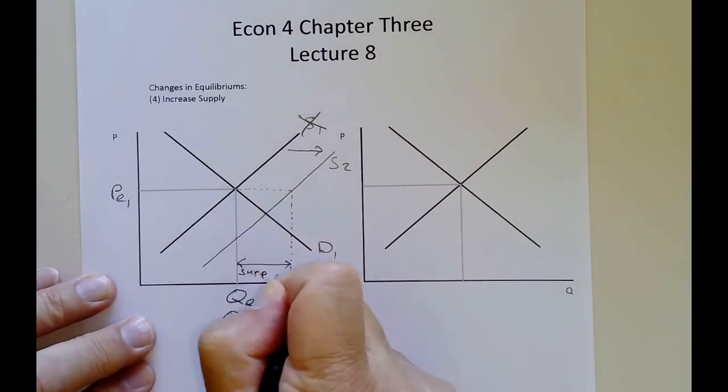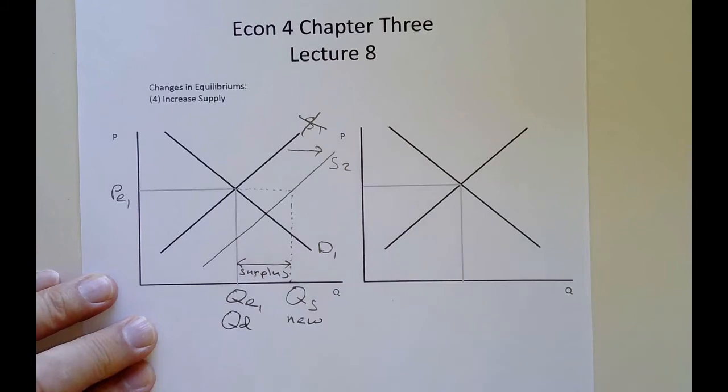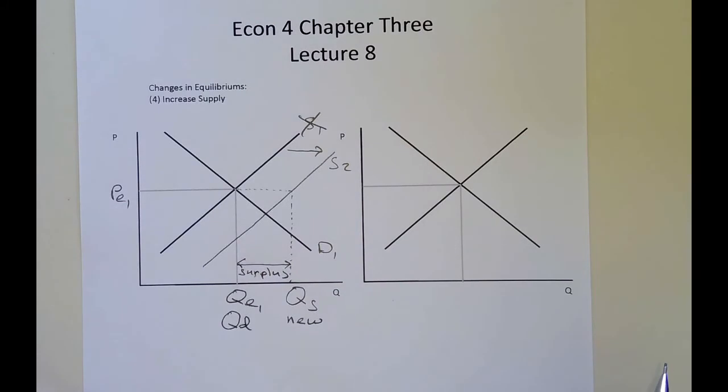Surplus. How do I know it's a surplus? Because the quantity supplied is greater than the quantity demanded. How do I know that? Because the quantity supplied, the new one, is further out to the right than the quantity demanded.